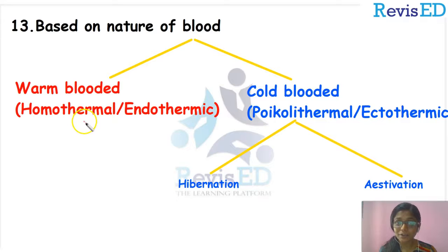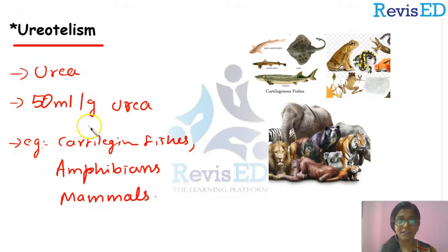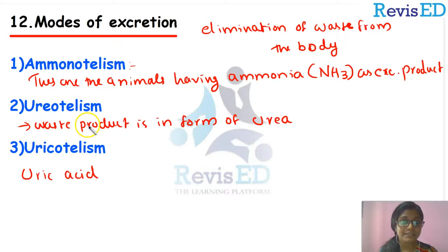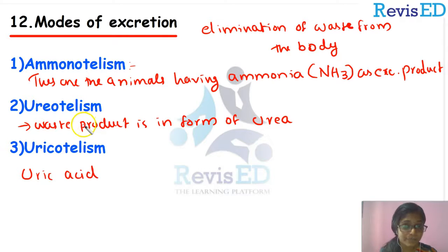So children, we were discussing about the basis of classification among animals. In the last session, we discussed how we can classify animals based on the modes of excretion: Ammonotellism, Ureotellism, and Uricotellism. In Ammonotellism, the waste product is Ammonia. In Ureotellism, the waste product is Urea. And in Uricotellism, the waste product is Uric Acid. Based on this, we can classify animals.